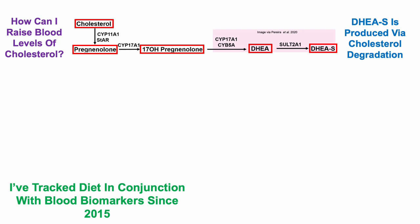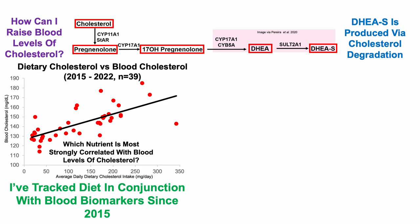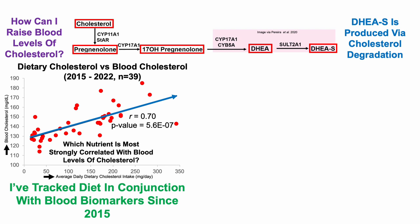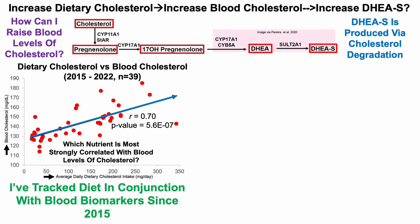I've tracked diet in conjunction with blood biomarkers since 2015, so I can see which nutrient is most strongly correlated with blood levels of cholesterol in order to potentially affect DHEA sulfate levels. I know there are published studies showing that dietary cholesterol doesn't impact blood cholesterol, but in my data — comparing dietary cholesterol and blood cholesterol across 39 blood tests since 2015 — we can see a significant correlation between those two. When I've had a higher dietary cholesterol intake, blood levels of cholesterol are correspondingly higher. This is a correlation, not causation. So that raises the hypothesis: if I increase dietary cholesterol, I should expect to see an increase in blood cholesterol, and then relatively higher levels of DHEA sulfate.